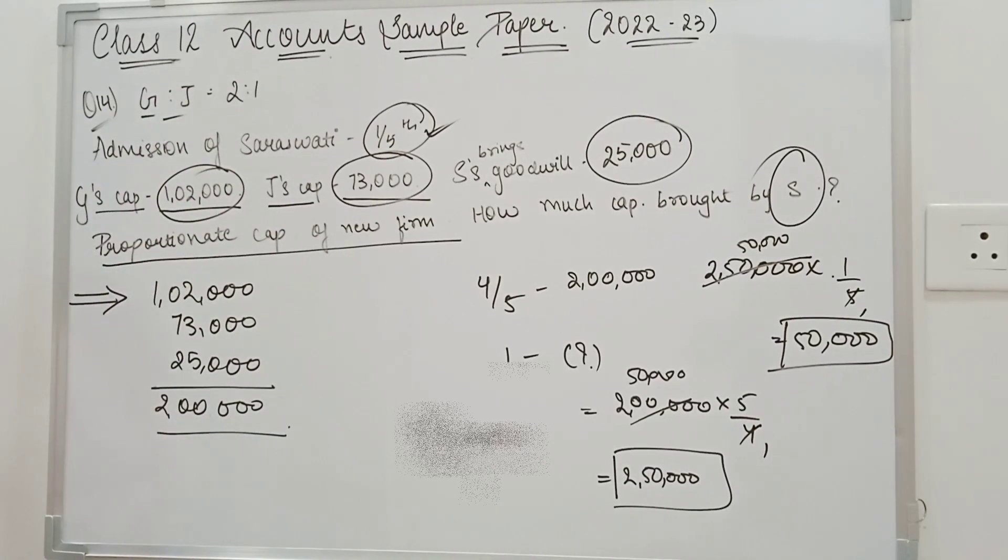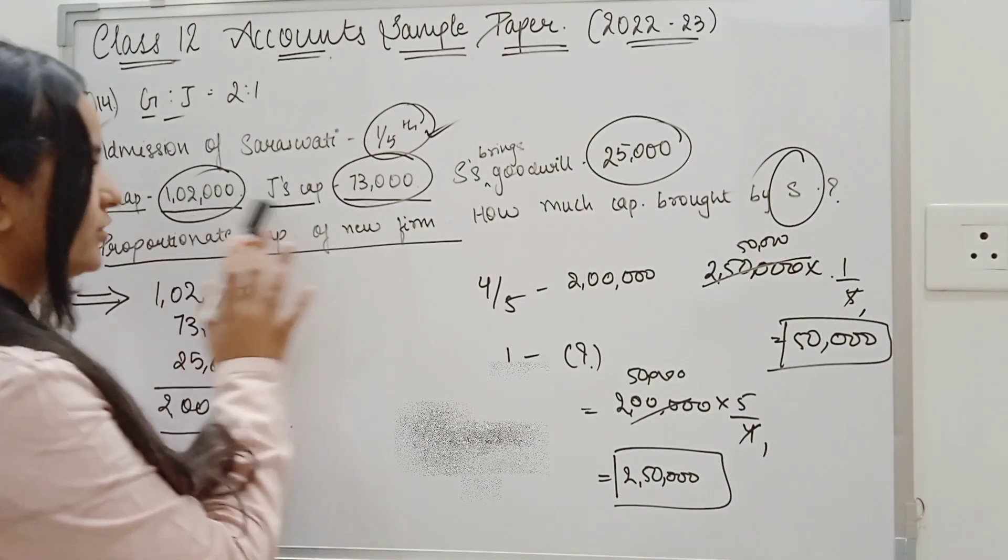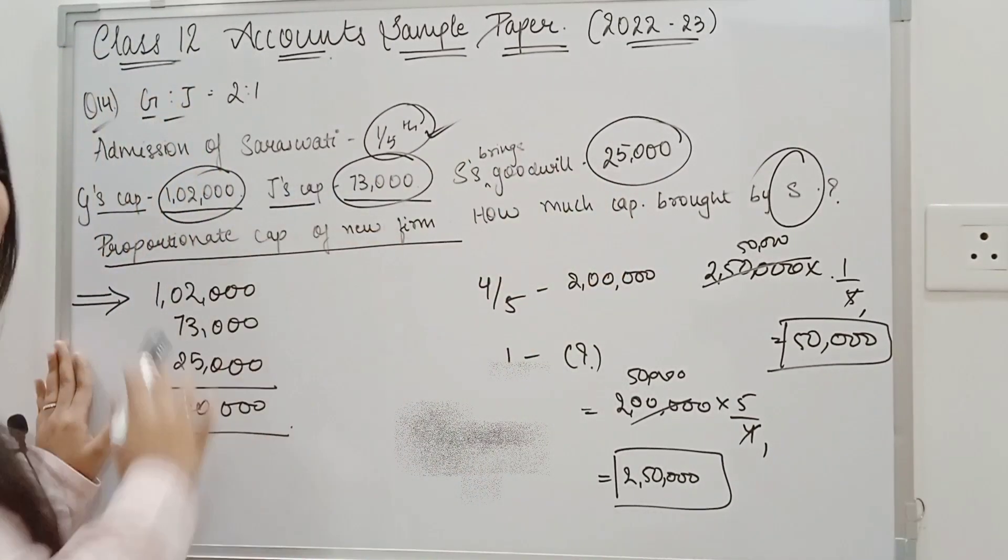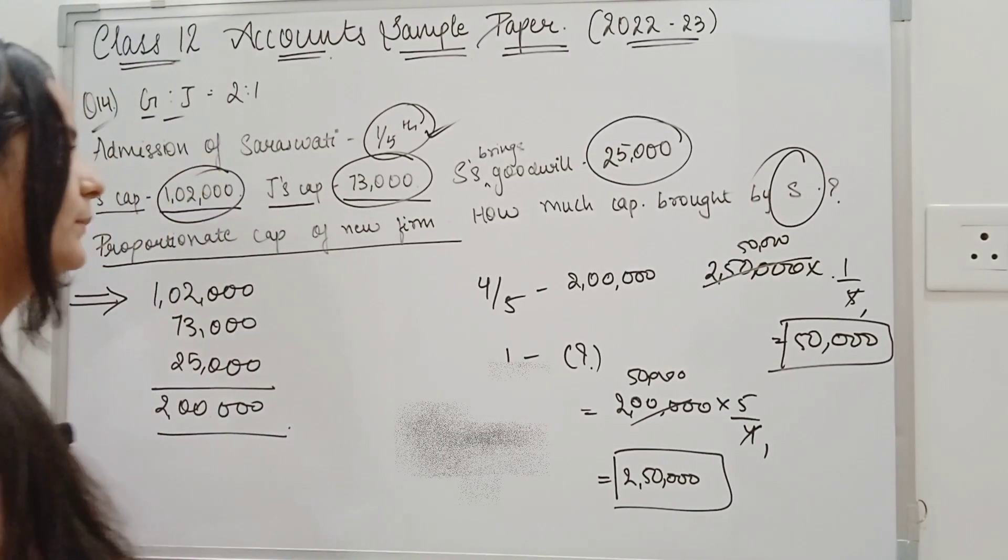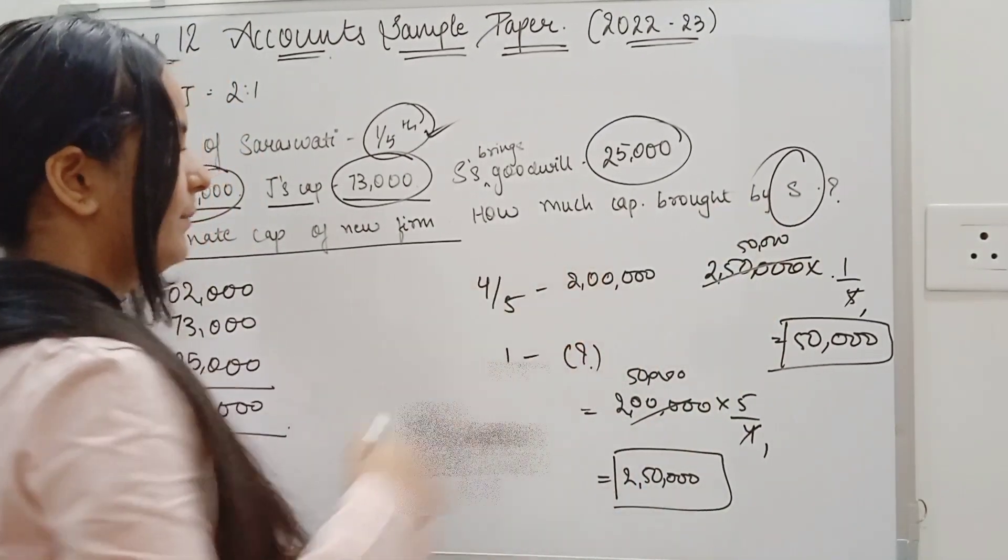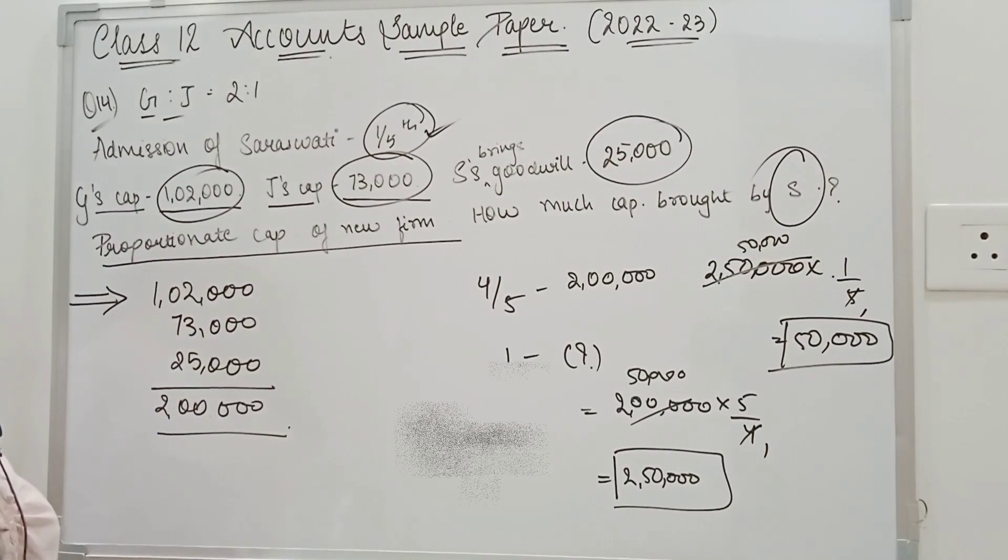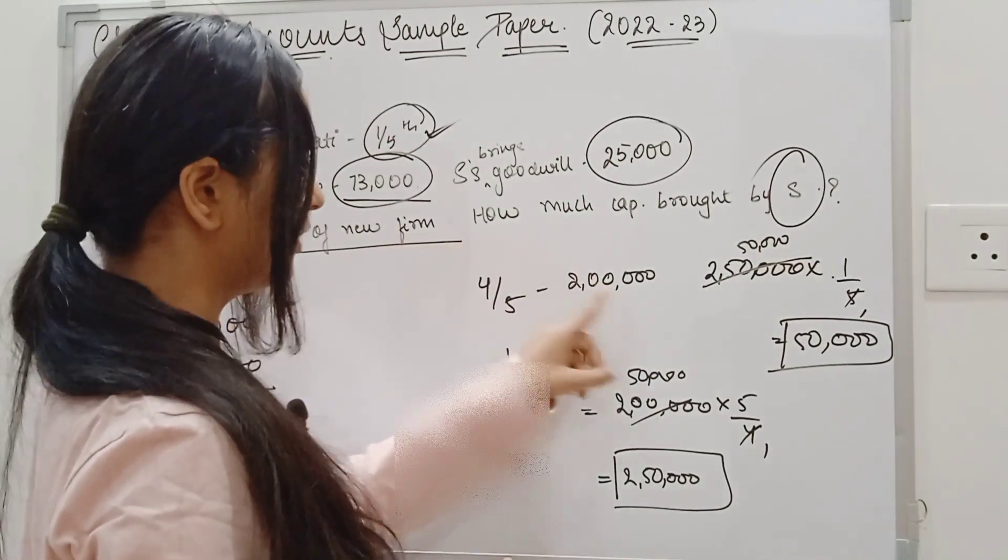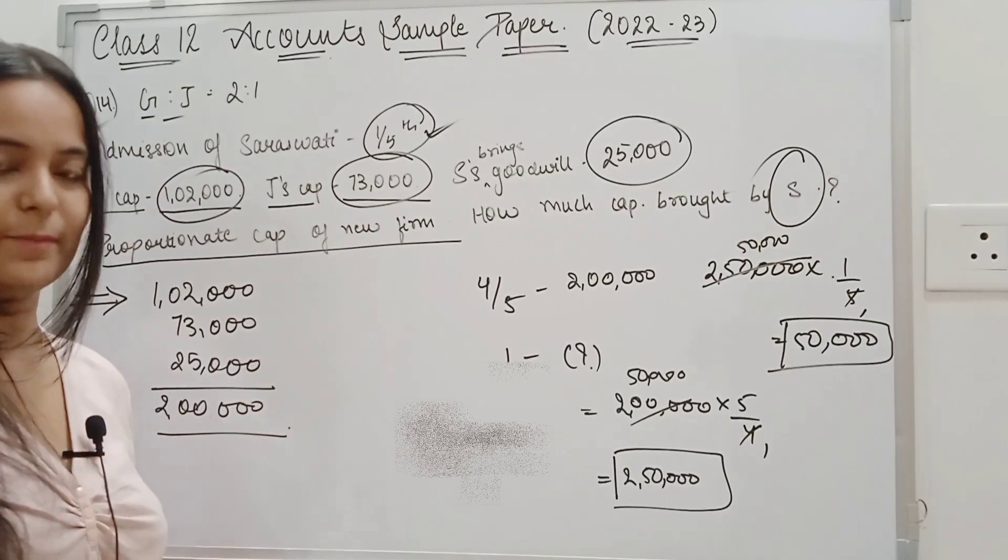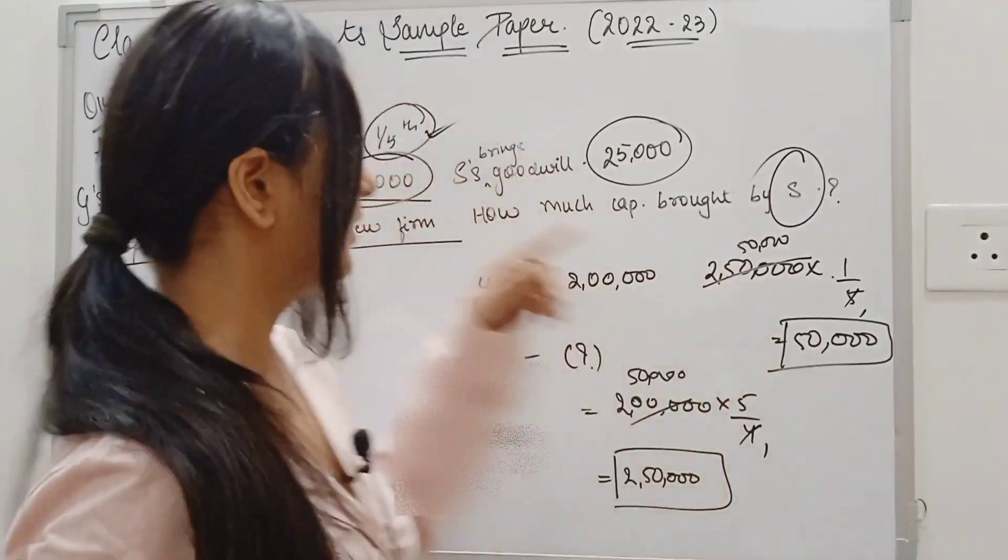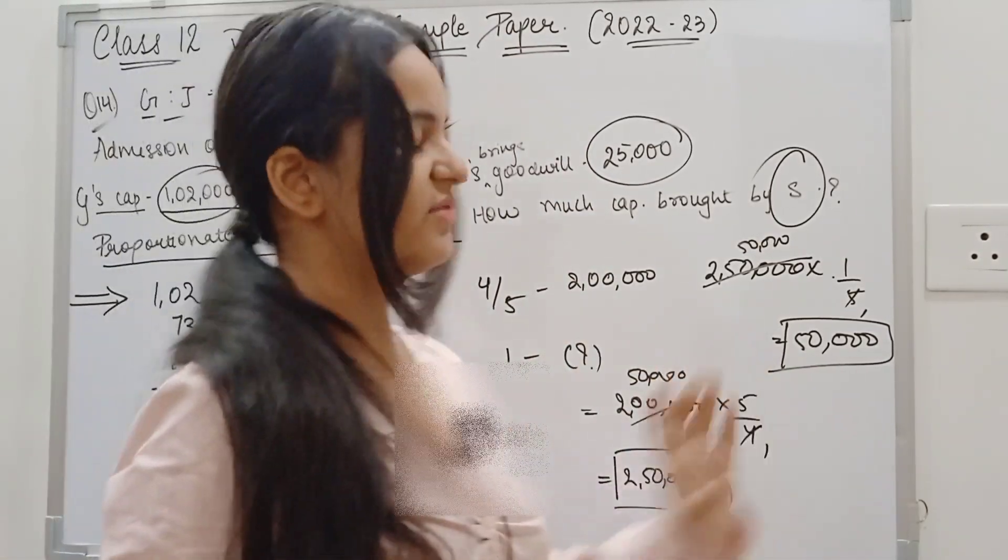Two partners G and J, their profit sharing ratio 2 ratio is 1. They have admitted Saraswati to the 1/5th share. Their capital, 1 lakh 2,000 and 73,000. So Saraswati's goodwill, which will be distributed in both partners. Obviously. So we added them all. Now, we have to contribute to the proportionate capital. So I asked here, which is S, which is Saraswati, how much capital will be? So when we released G and J, then 2 lakh. Now, Saraswati's share is 1/5th. So how much will the rest be? 4/5th. So if it is 2 lakh, then how much total capital will be? 2,50,000. And Saraswati's capital will be 50,000.